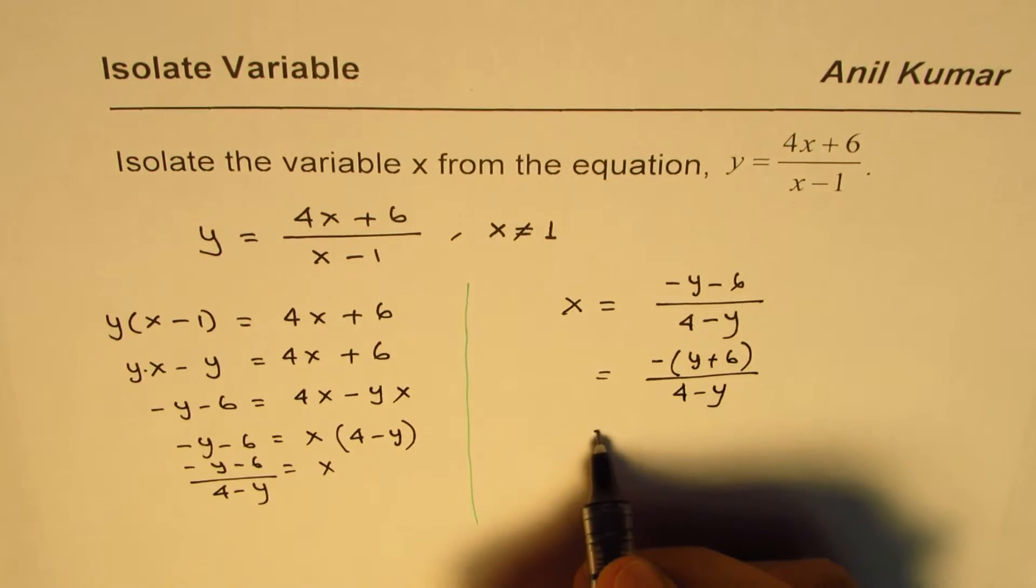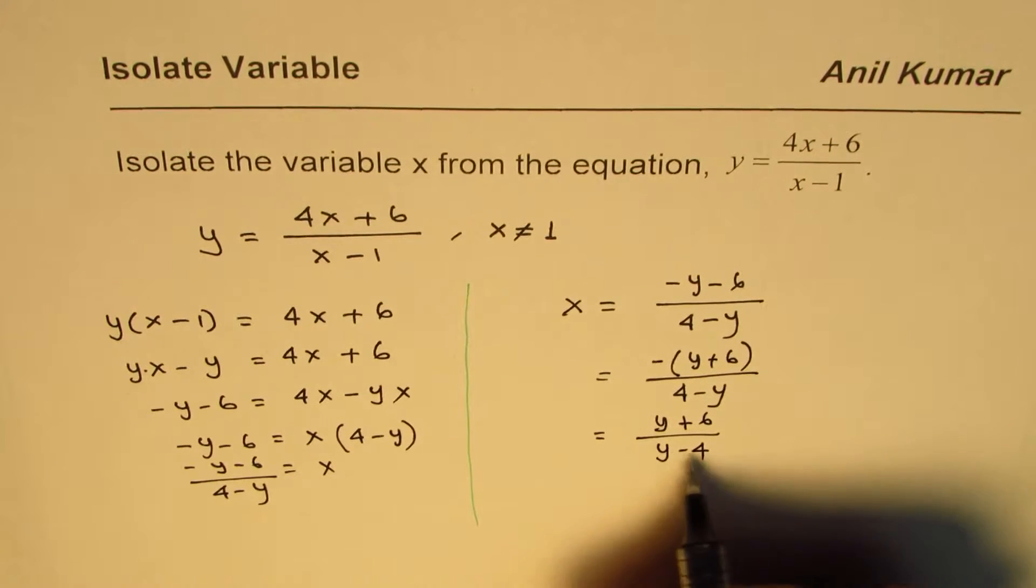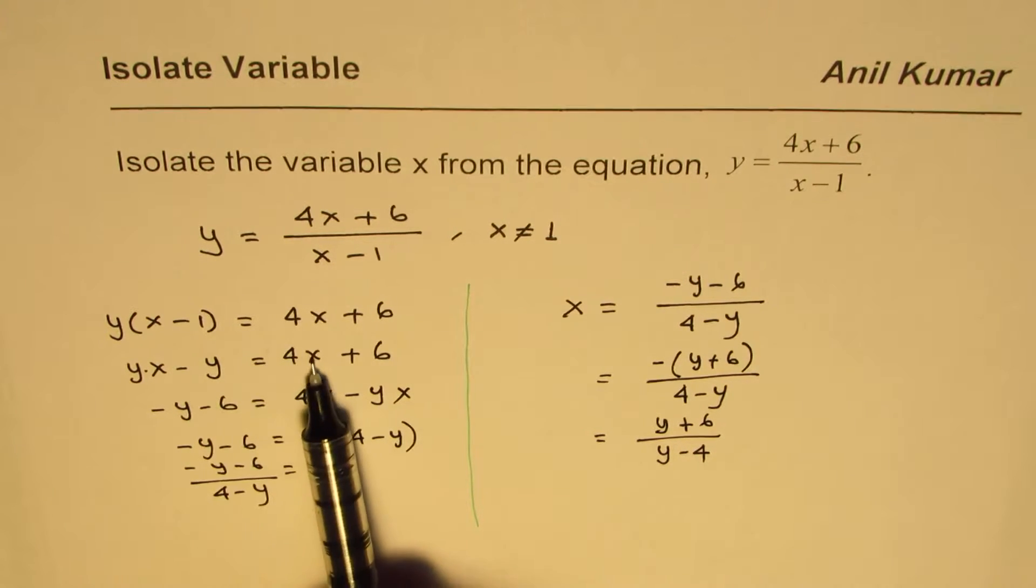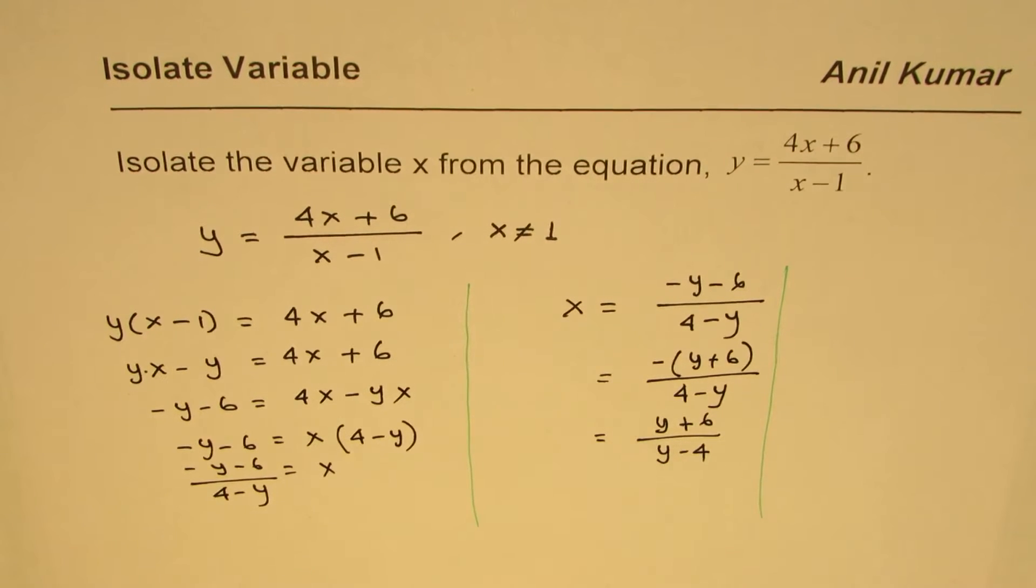You could also write this as y plus 6 divided by y minus 4. That is another way of writing the same thing, which you could have got if you brought this on the left side. That was an alternate method.